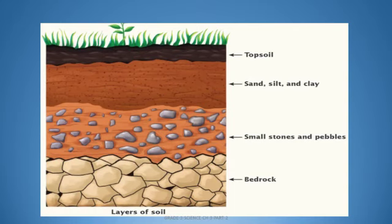This first layer is known as topsoil. The second layer contains sand, silt, and clay — everyone has seen sand and clay. So this second layer consists of sand, silt, and clay. The third layer is made up of small stones and pebbles — pebbles are also small stones.